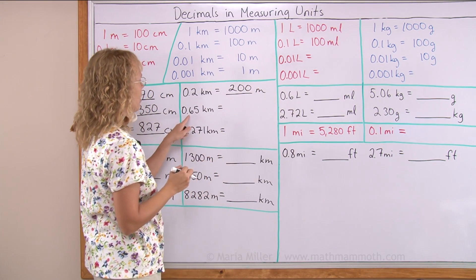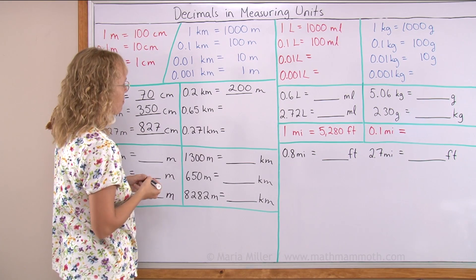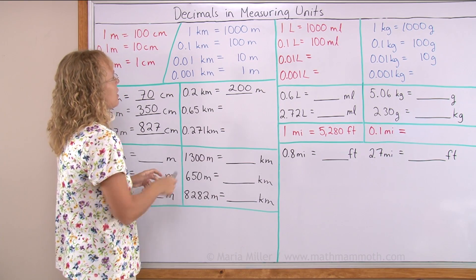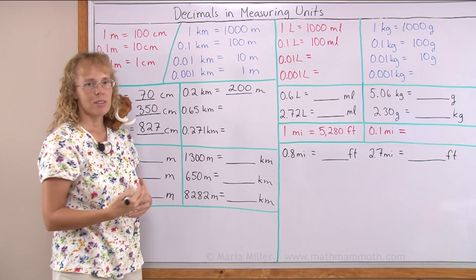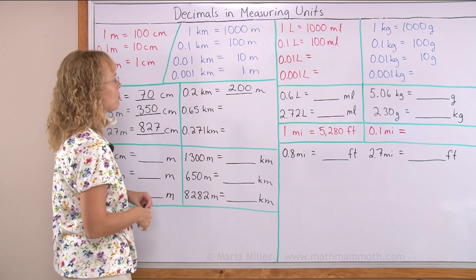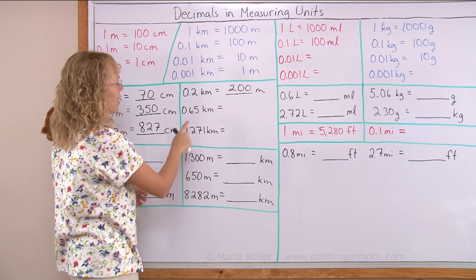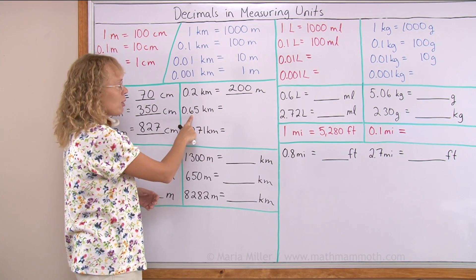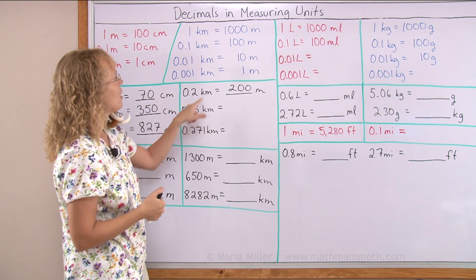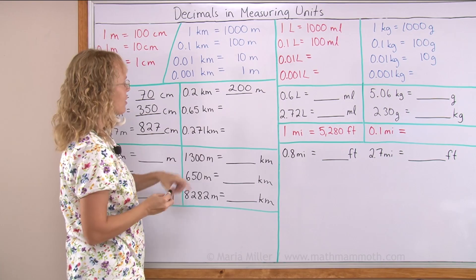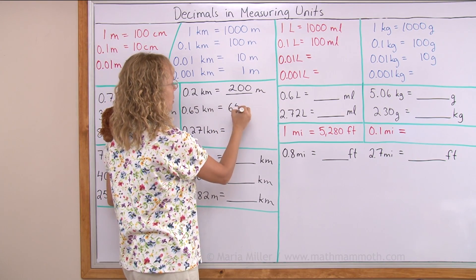Now here I have 65 hundredths of a kilometer. If a hundredth part is 10 meters, then 65 hundredths of a kilometer would be 65 times that. But you can also think of it this way: six tenths of a kilometer here, and five hundredths of a kilometer. Six tenths of a kilometer would be 600 meters. And then you have from here 50 meters. 650 meters.